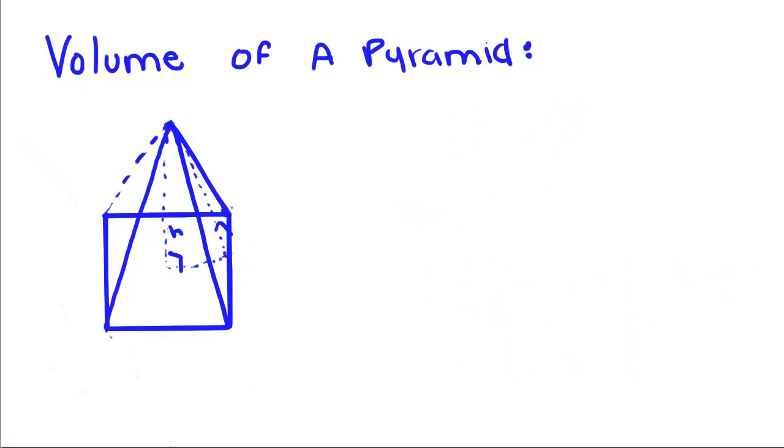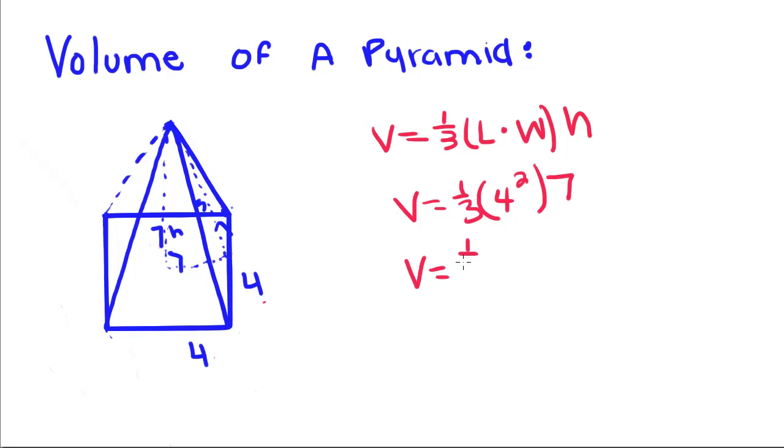Now we're going to do one more example. Volume is equal to one-third, length times width, h. So volume is equal to one-third, 4 times 4, h. And right here, that's a 7. Volume is equal to one-third times 4 squared is 16 times 7.